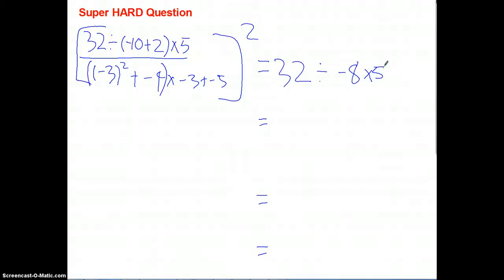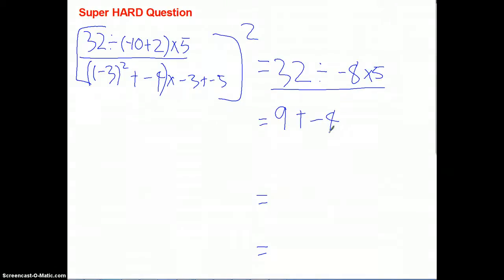And now, let's do the bottom half. What is 3 to the power of 2? That's 9. So, we want to do 9 plus negative 4, in close in parentheses, times negative 3 plus negative 5.